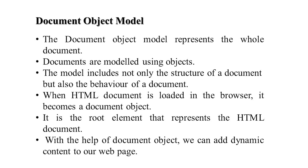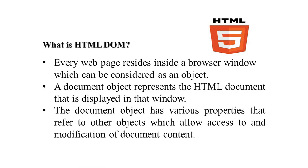The object model represents the whole document, and documents are modeled using objects. The model includes not only the structure but also the behavior of the document. Whenever an HTML document is loaded in the browser, it becomes a document object, which is the root element representing the HTML document. With the document object, we can add dynamic content to our webpage.